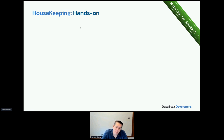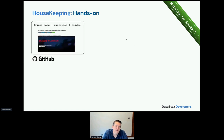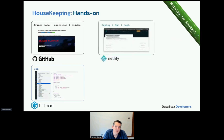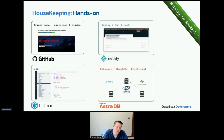The nice thing about this workshop is you don't have to install anything — you can stay in your browser. You have GitHub for source code and exercises, GitPod for a Visual Studio Code-like environment, Netlify to deploy and host, and the Astra database with native GraphQL and GraphQL Playground that connects directly to the database.